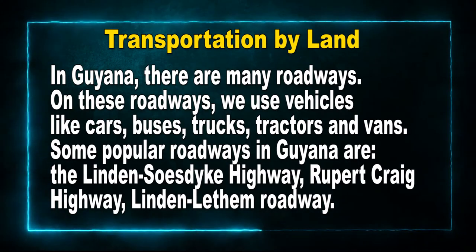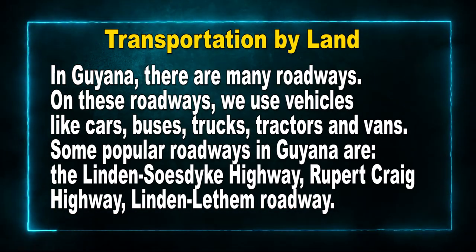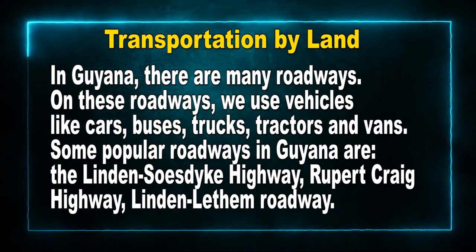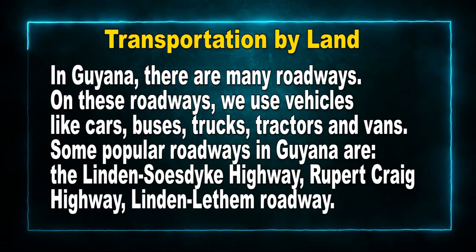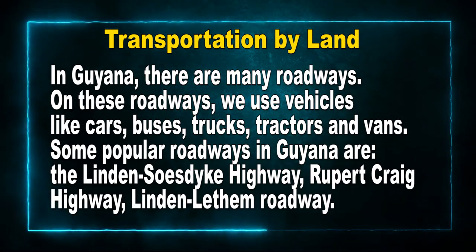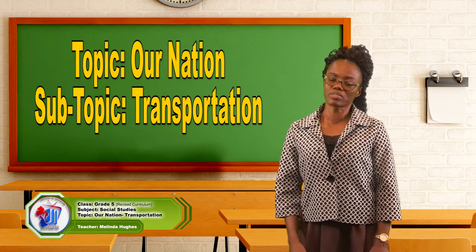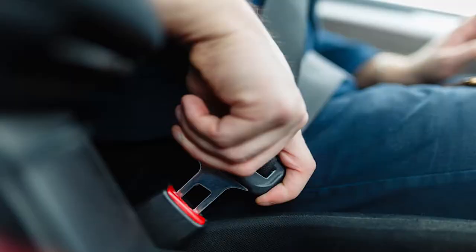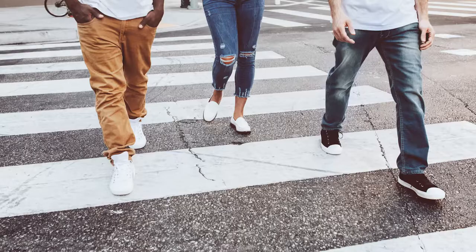Transportation by land — in Guyana there are many roadways. On these roadways we use vehicles like cars, buses, trucks, tractors and vans. Some popular roadways in Guyana are the Linden-Soesdyke Highway, the Rupert Craig Highway, and the Linden-Lethem Roadway. When using the roadways we must practice road safety — we must obey road safety rules, wear our seat belts, use the curb drill, and also the pedestrian crossing.